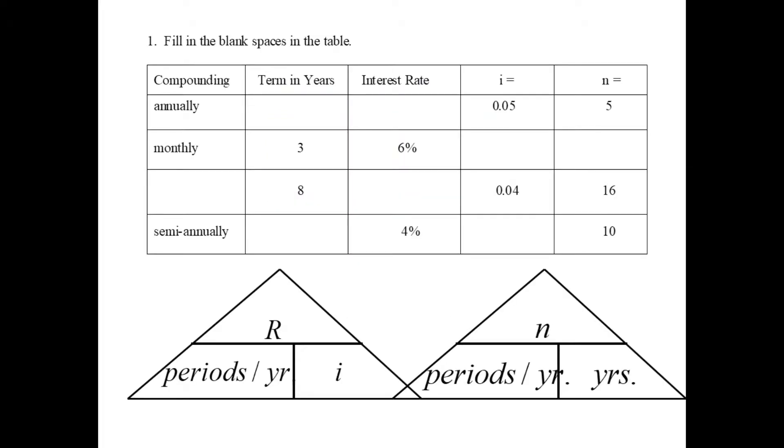I have an example here, which consists of four mini examples. Each row here is an investment. Down here, I've tried to display the relationship between the different variables in these pyramids, in these triangles. R, the interest rate per year, is the number of periods per year times I. So we multiply across the bottom to get the top. Or we might say that I, the interest rate per interest period, is the annual rate divided by the number of periods in a year. So we can get the bottom by dividing the top by the other bottom. These two triangles don't really need to be memorized because they both stand to reason. Common sense would tell you the answer.